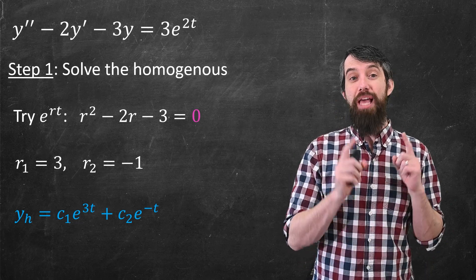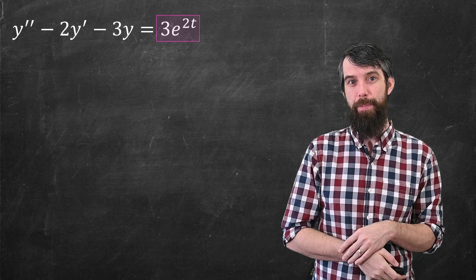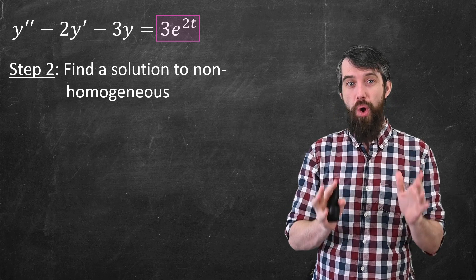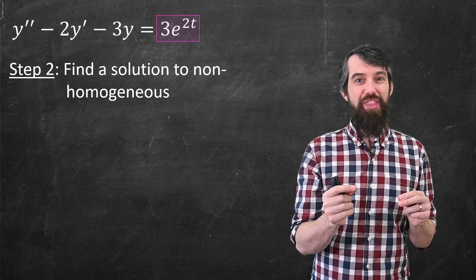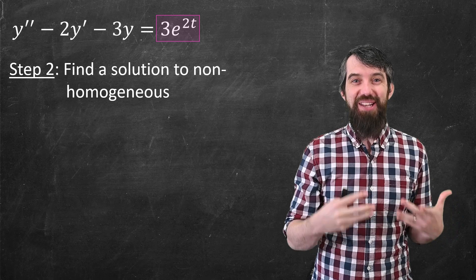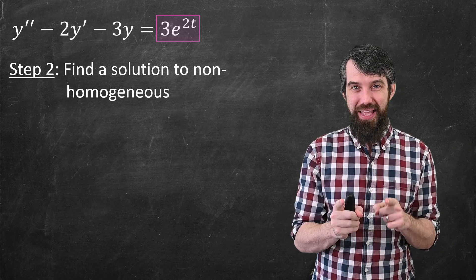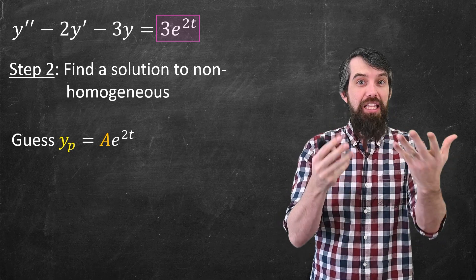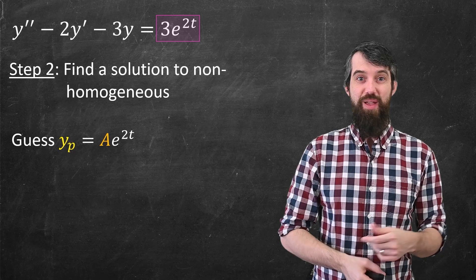Now we move on to step two, where we look at the non-homogeneity — the 3e to the 2t part. I want to find any one solution to the non-homogeneous equation. What I'm going to do is make a guess. I'm going to guess that the answer looks kind of like the right-hand side, kind of like 3e to the 2t. Because this is called the method of undetermined coefficients, my coefficient will be undetermined. So my guess is: instead of the 3, I put an undetermined coefficient a, but leave the same structure — a times e to the 2t.